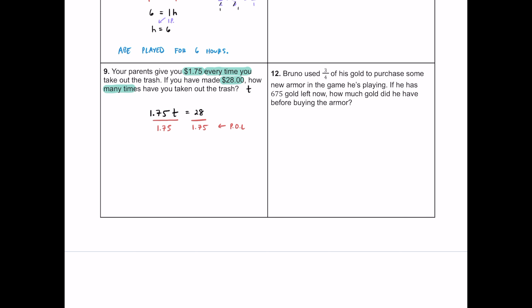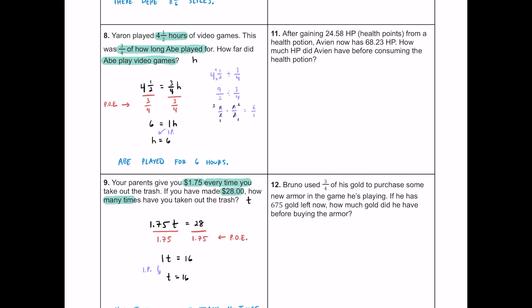Dividing gives us 1T on the left. On the right, $28 divided by $1.75 equals 16. Dropping the one is the identity property. Conclusion: you took out the trash 16 times. It's important not only to get the answer but to know what it represents — these are all realistic scenarios.